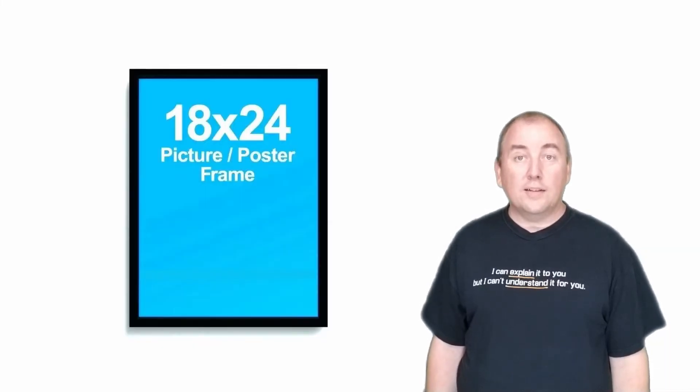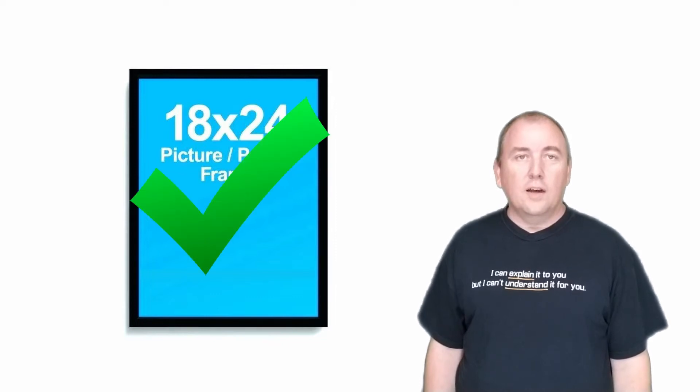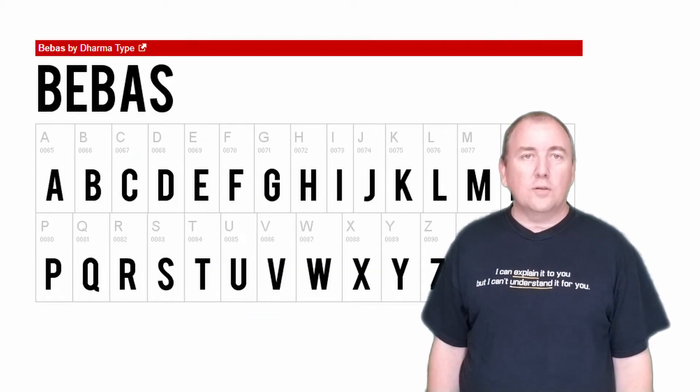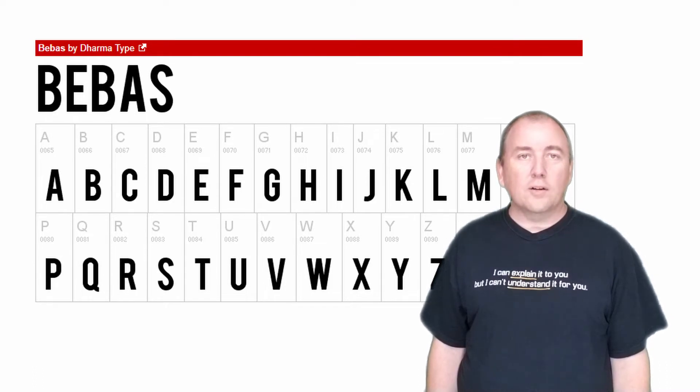The sign boards that we are using are 18 by 24 inches. We chose to use the signs in portrait layout versus the landscape layout. We chose Beavis as our font as it made tall block letters. I have put a link to this font in the description below.